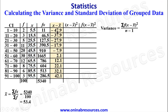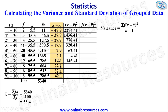We then go ahead to square this column. So negative 47.9 squared gives 2294.41. Negative 37.9 squared gives 1436.41. Negative 27.9 squared gives 778.41. Negative 17.9 squared gives 320.41. Negative 7.9 squared gives 62.41. 2.1 squared gives 4.41. 12.1 squared gives 146.41. 22.1 squared gives 488.41. 32.1 squared gives 1030.41. 42.1 squared gives 1772.41. And that's all for this column.